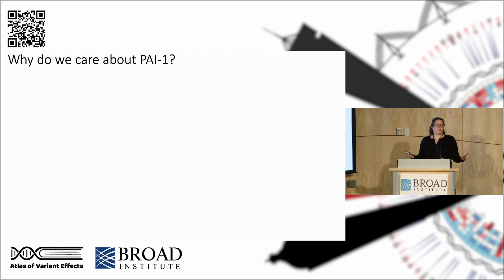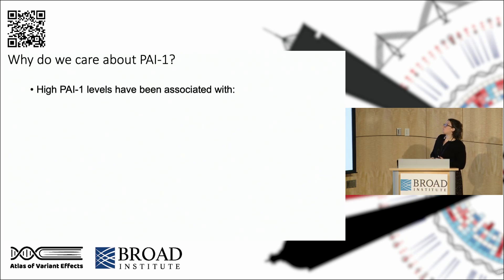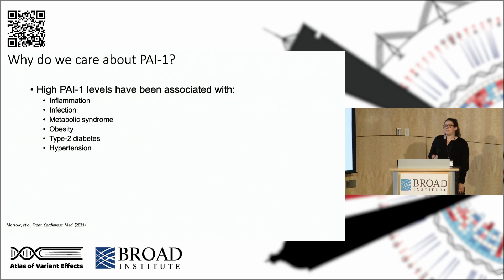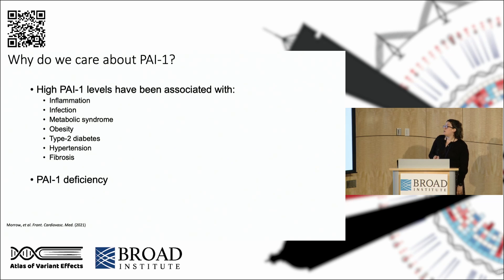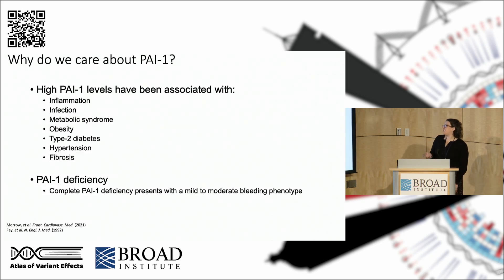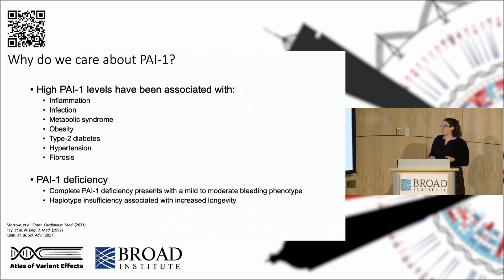We care about PAI-1 because it's really important for helping regulate hemostasis, but it's also been implicated in a lot of other pathways. High PAI-1 levels are associated with inflammation and infection — it's an acute phase reactant. It's also been linked to metabolic syndrome, obesity, type 2 diabetes, hypertension, and fibrosis, and for many of these pathways the mechanisms by which it impacts these pathophysiologies isn't known. There's a rare population with PAI-1 deficiency, which presents with a mild to moderate bleeding phenotype, and haplotype insufficiency in this population is associated with increased longevity, though the mechanisms are still being determined.